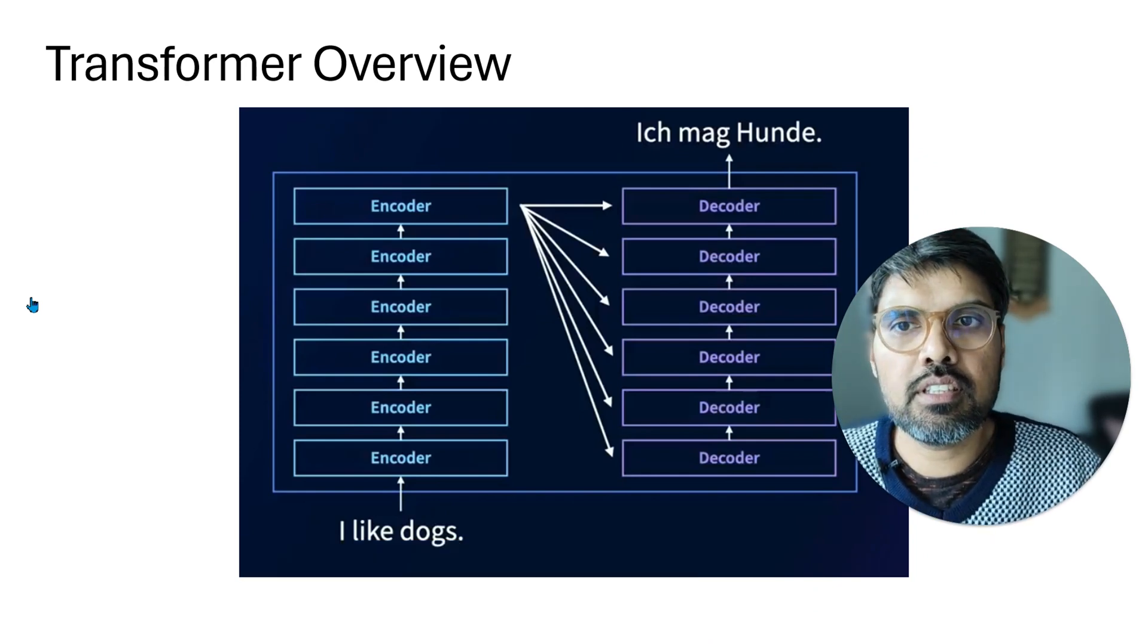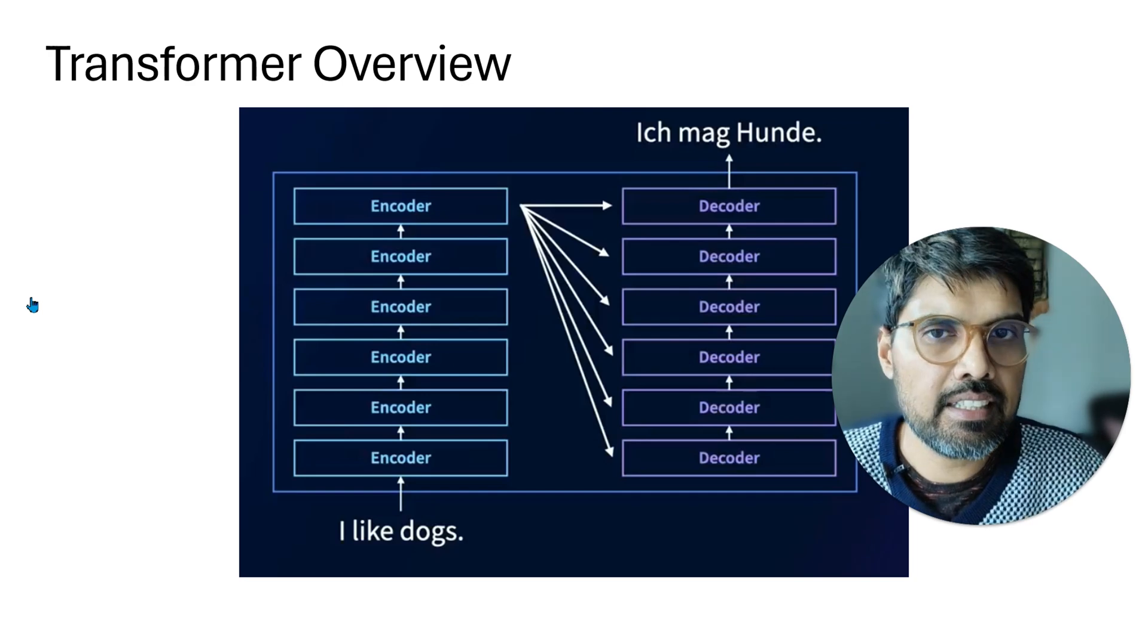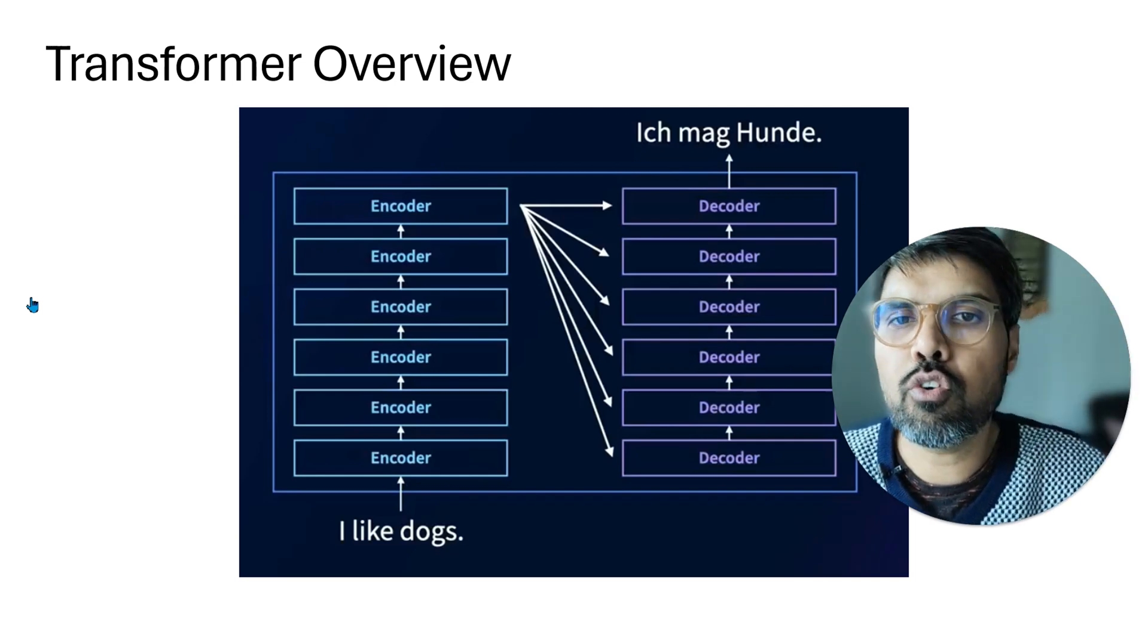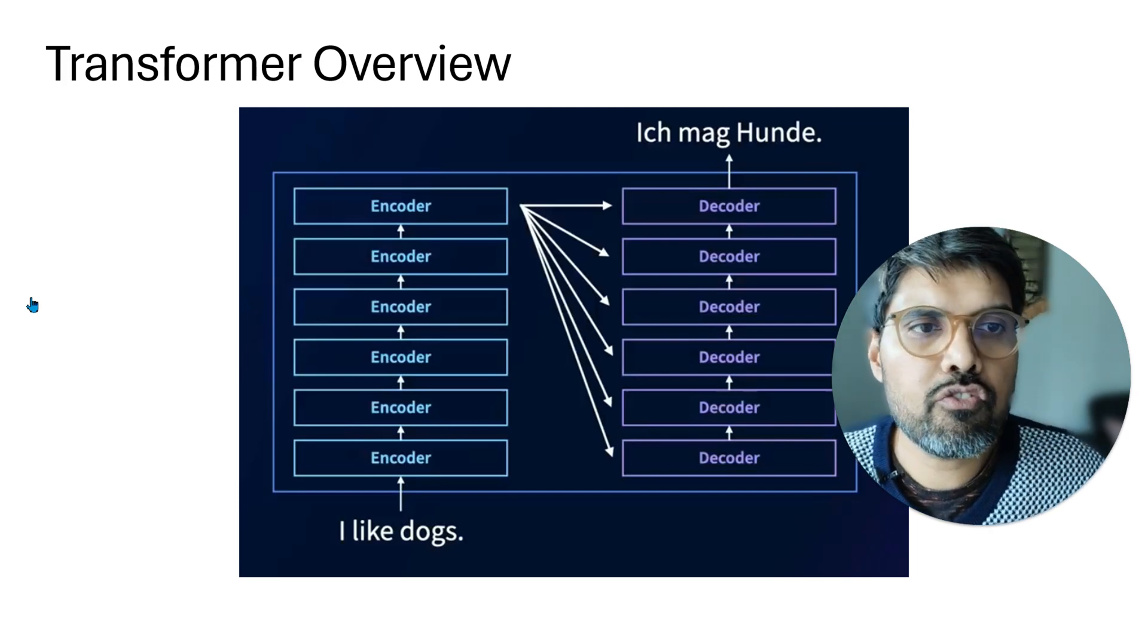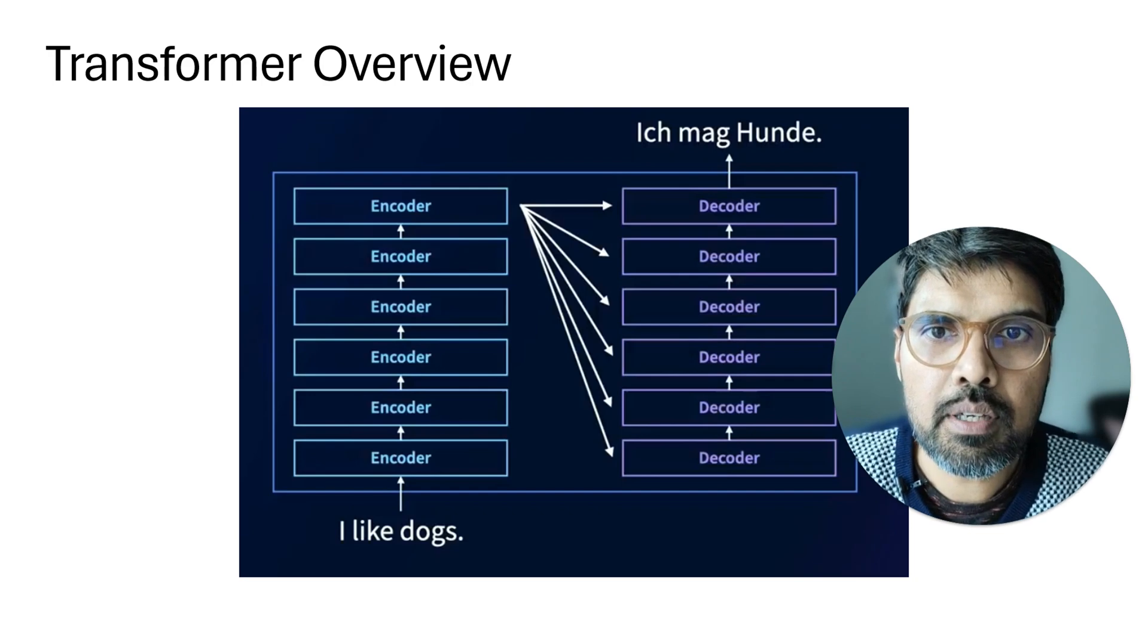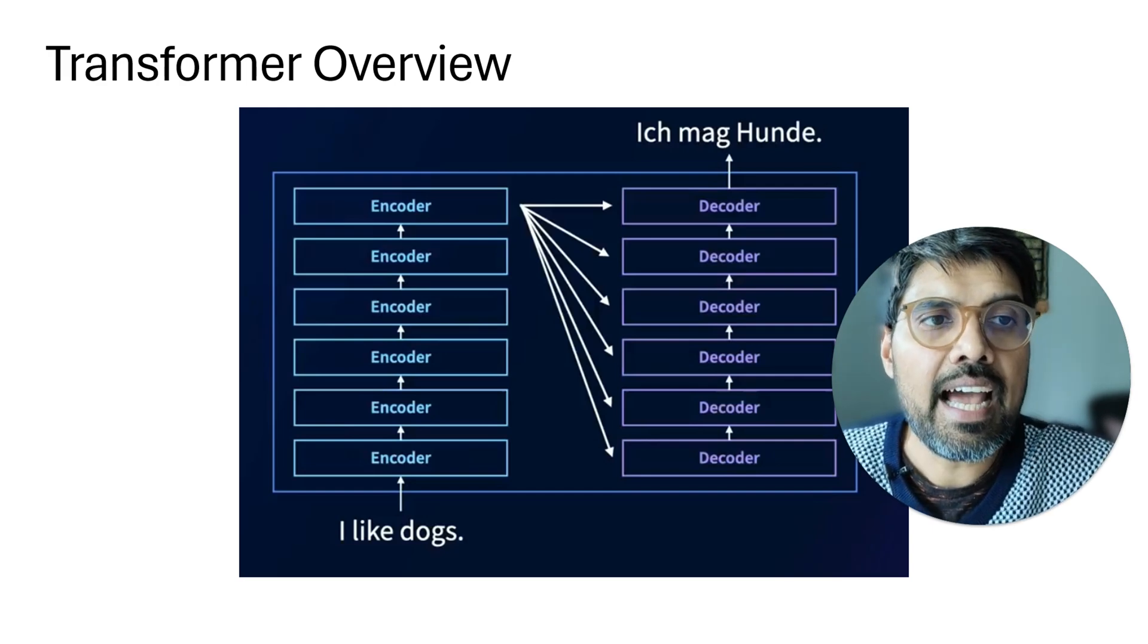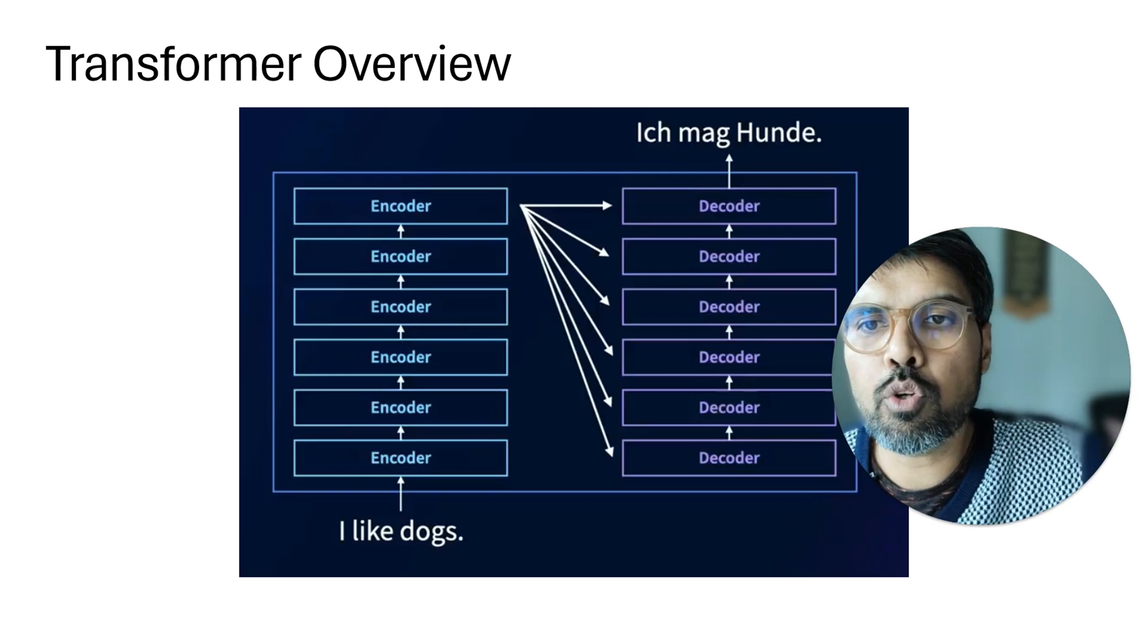Transformers have six encoders and six decoders. Each contains the attention mechanism, which allows the model to focus on different parts of the input text. You feed the input at the bottom, and the output from the first encoder is sent into the second encoder, and so on, all the way to the topmost encoder.